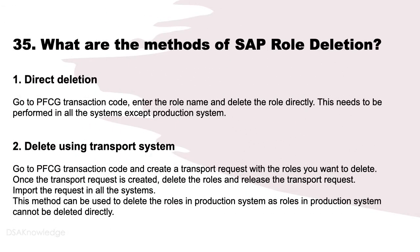What are the methods of SAP role deletion? There are two methods. First option is direct deletion: go to PFCG, enter the role name, and delete the role directly. This needs to be performed in all systems except production. Second option is deletion using the transport system: go to PFCG, create a transport request with the roles to delete, delete the roles, and release the transport request. Import the request in all systems. This method can be used to delete roles in the production system, as roles in production cannot be deleted directly.